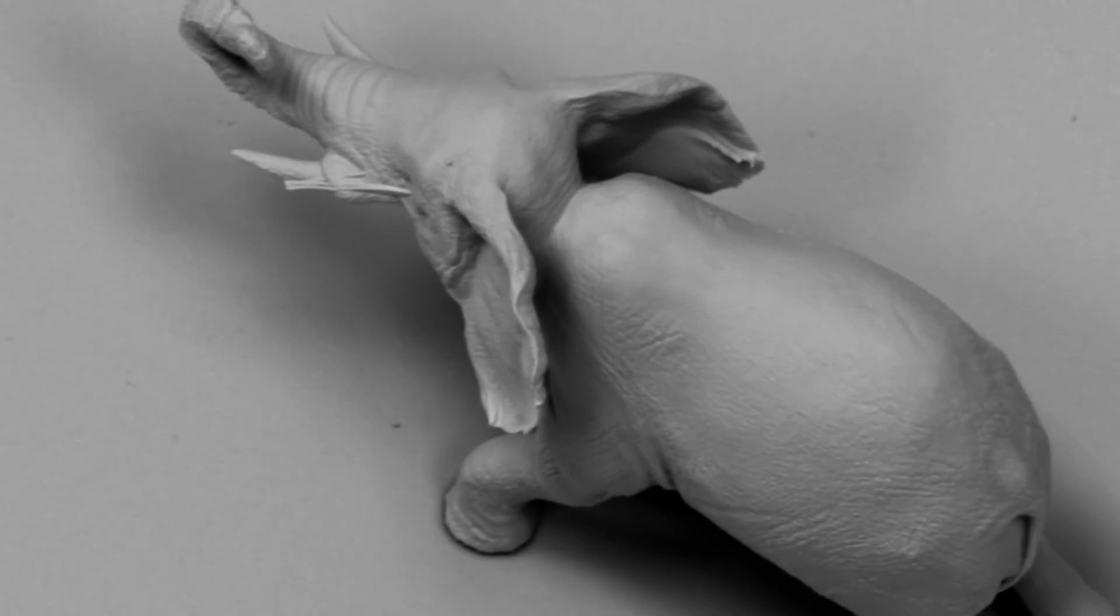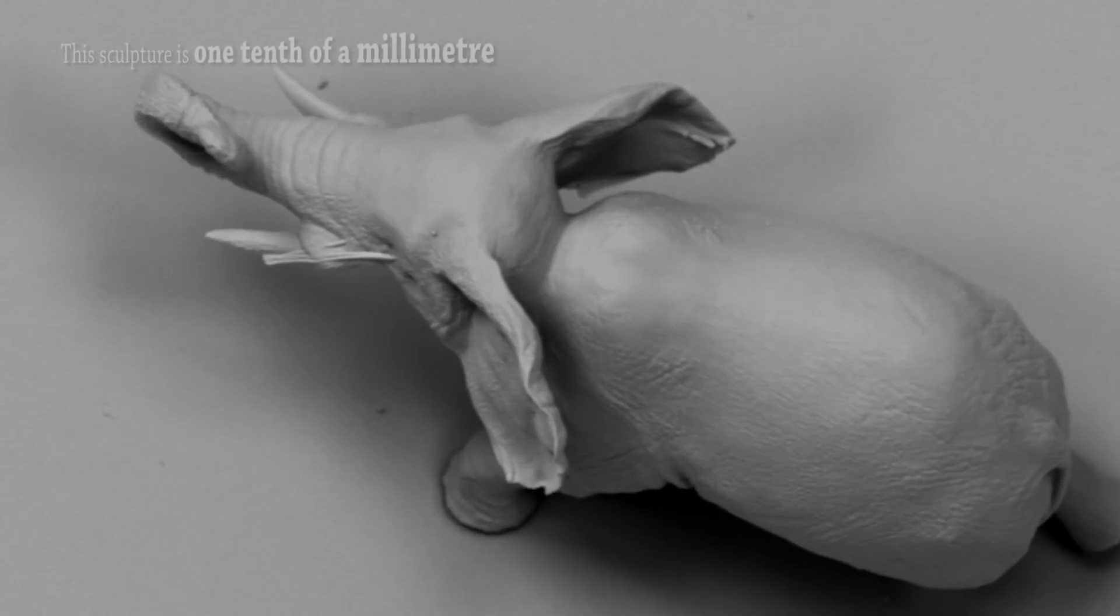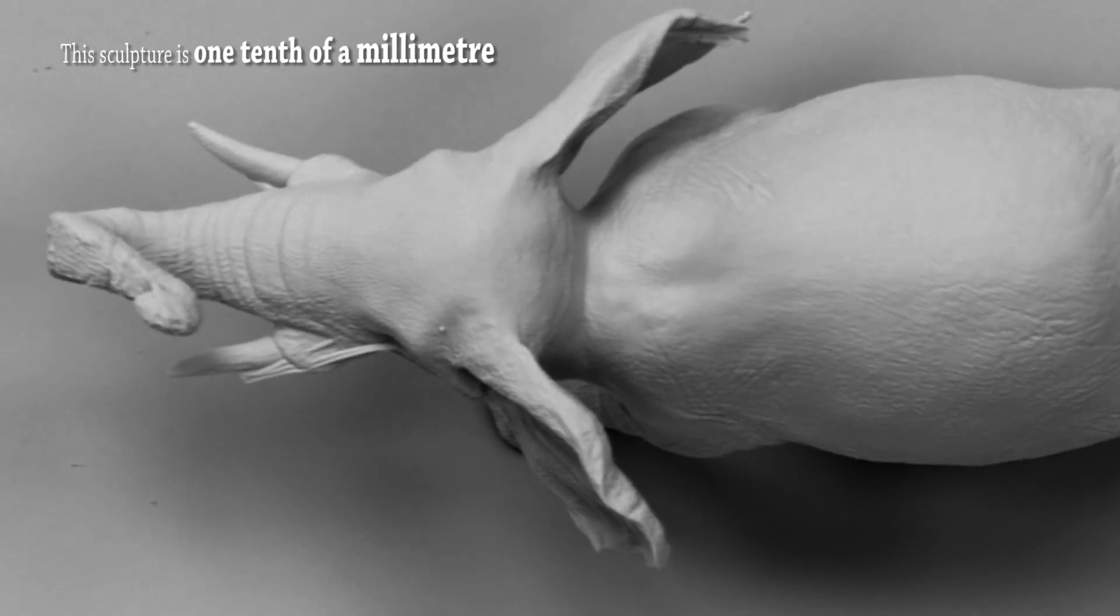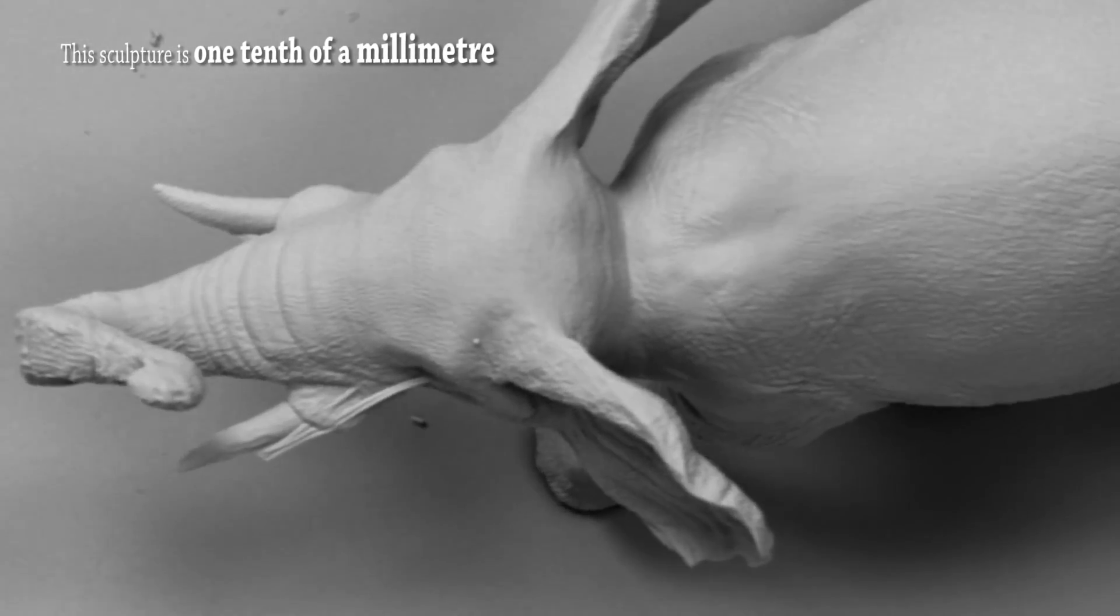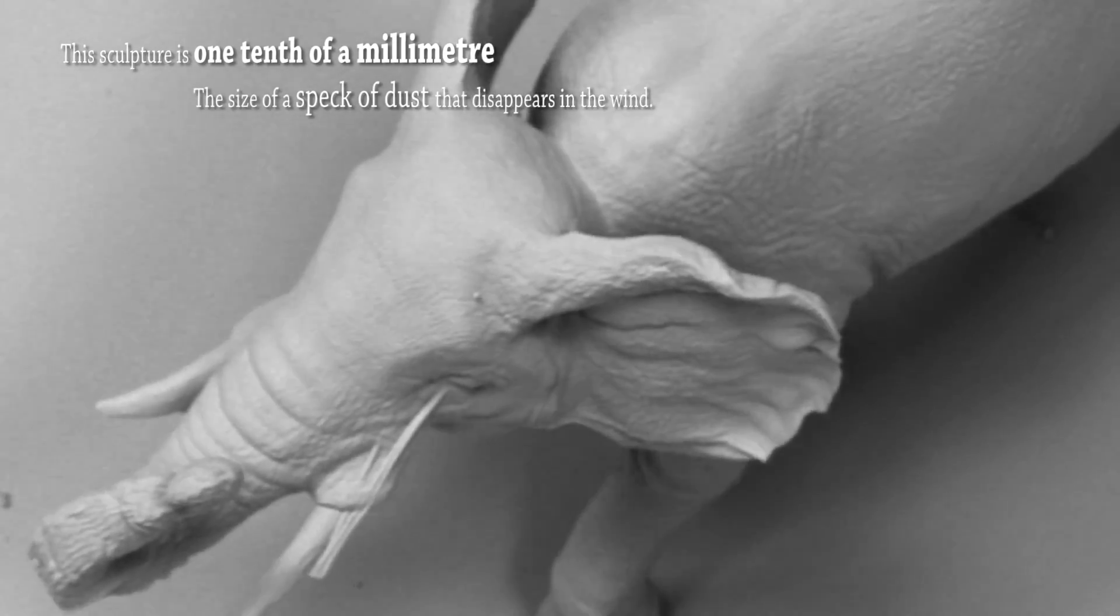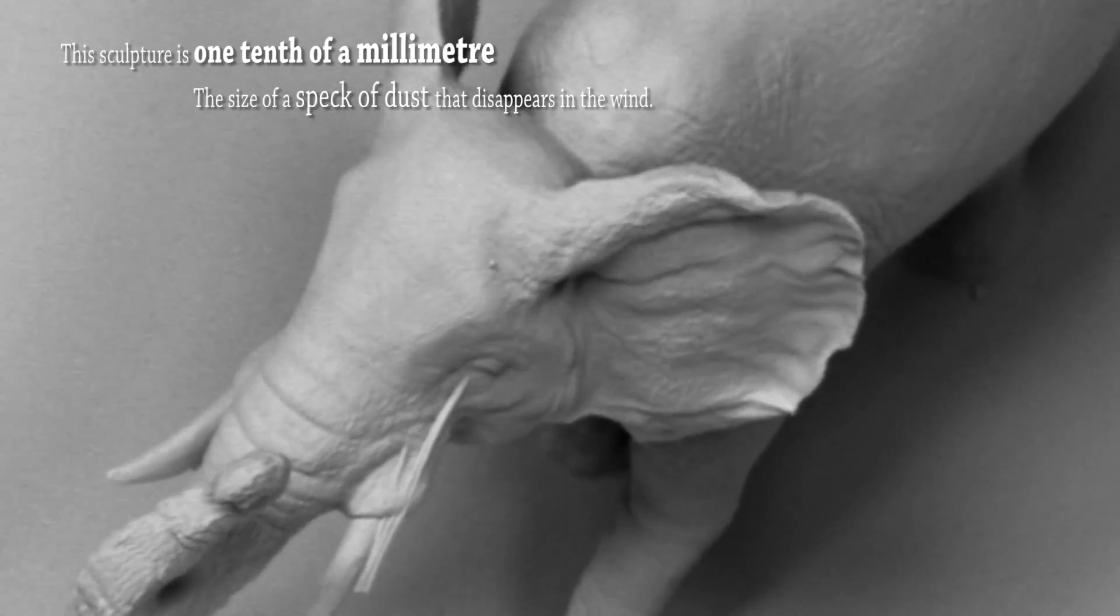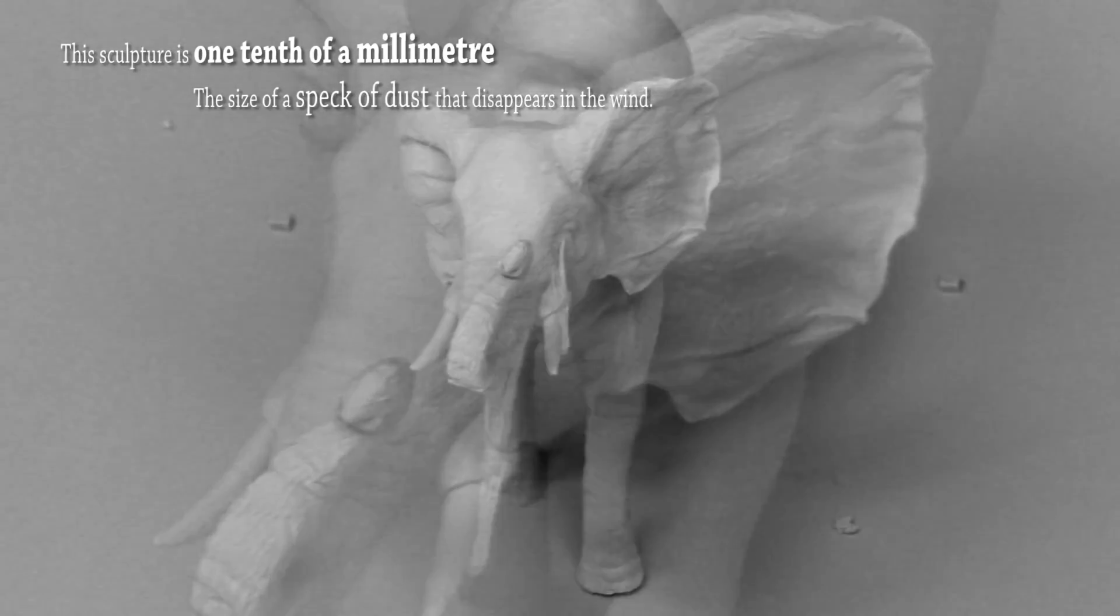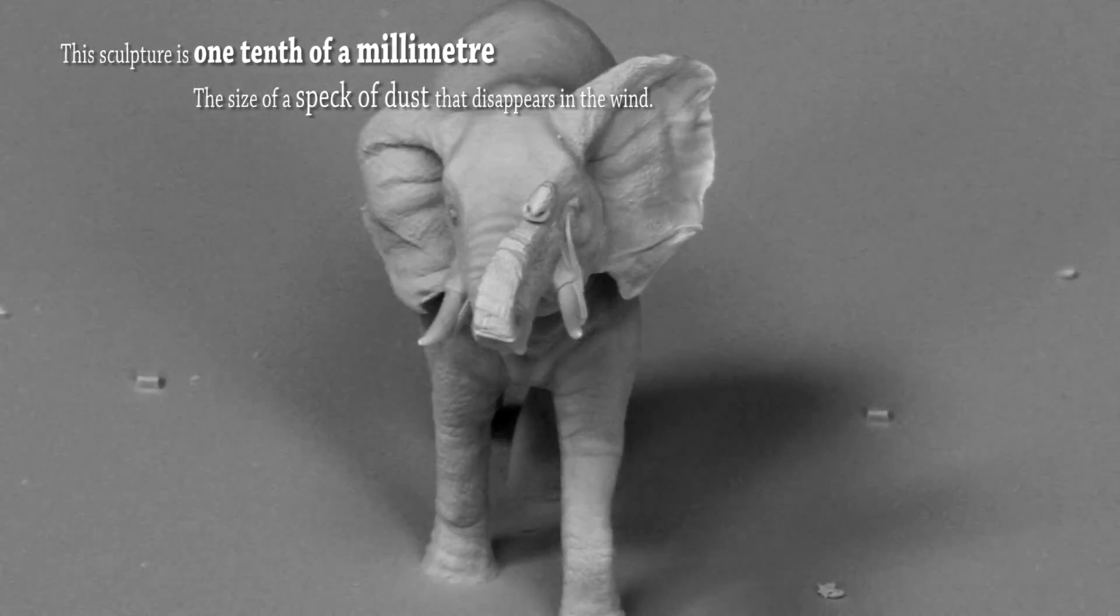They even had to create a whole new method of filming just to show them because they are now so small that you can't see the fine details in normal visible light. You have to remember that this elephant sculpture is just one tenth of a millimeter high and yet you can still see the fine details of the wrinkles on the skin.